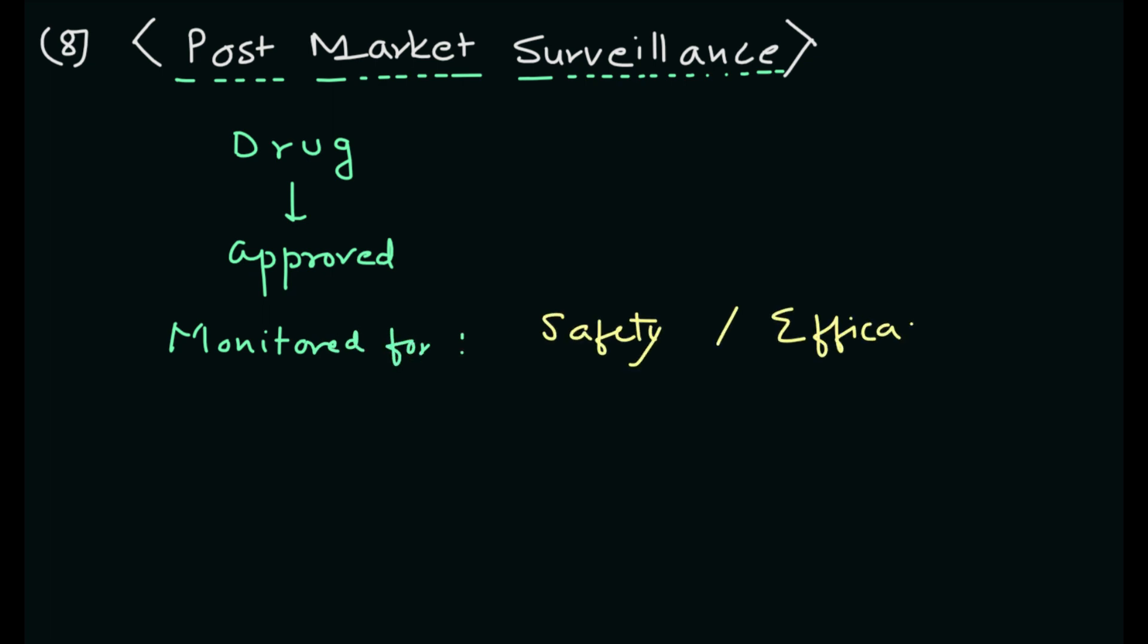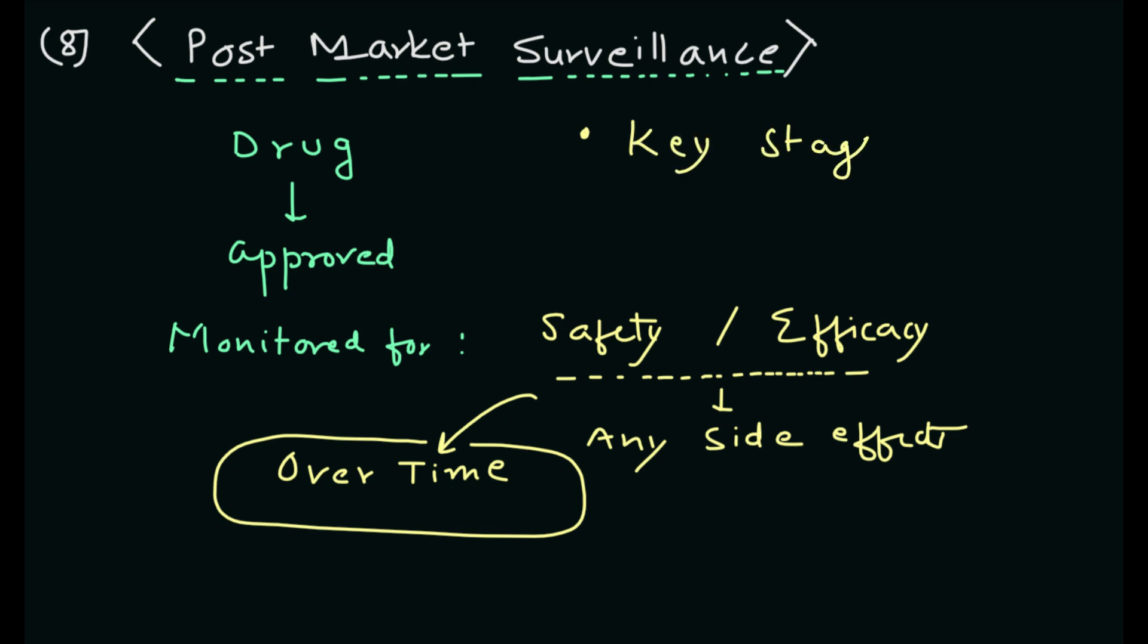The next step is post-market surveillance. After a drug is approved, it is continuously monitored for safety and efficacy in the general population to detect any adverse effects that were not identified during the clinical trials and to ensure that the drug remains safe and effective over time. These are the key stages in the drug discovery process.